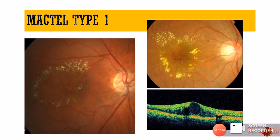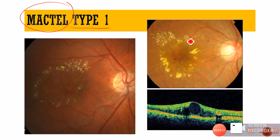Another condition is idiopathic juxtafoveal telangiectasia, also called MacTel — specifically MacTel type 1 — which presents as circinate maculopathy. The accompanying signs in MacTel include telangiectasias near the macular area, with dilated second-order arterioles showing a characteristic right-angle bend as they dive into the macula.